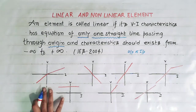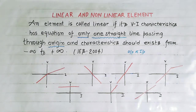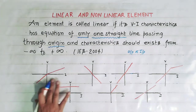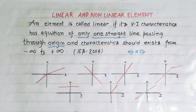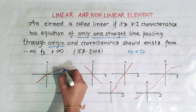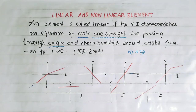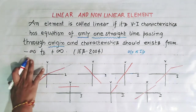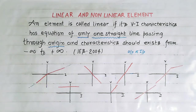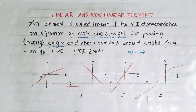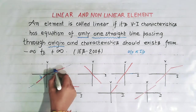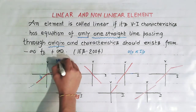Suppose these are V-I characteristics of some elements and we have to find which is linear and which is nonlinear. See this first example — this characteristic has the equation of two straight lines. It is extended up to plus infinity and minus infinity, so the characteristic exists from minus infinity to plus infinity, but it has two different straight line equations. That's why it is nonlinear.